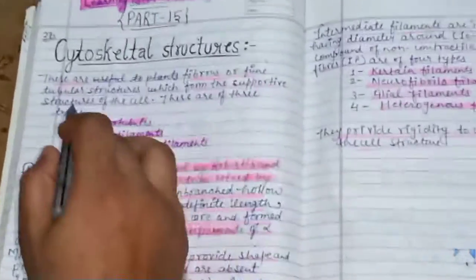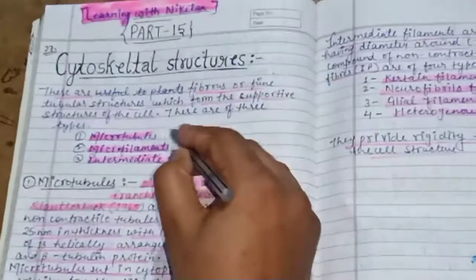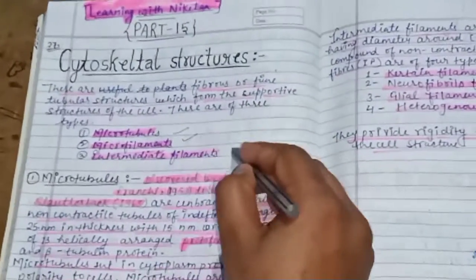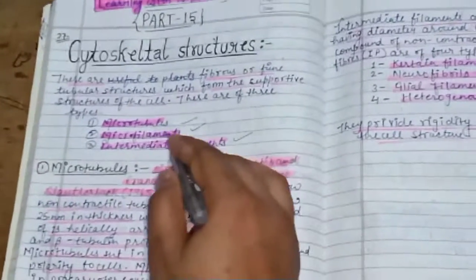These structures are of three types: microtubules, microfilaments, and intermediate filaments. Some sources refer to them as microfilaments, but I am using the term microfilaments.